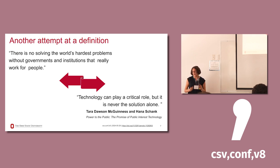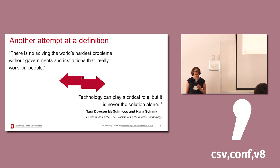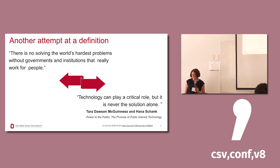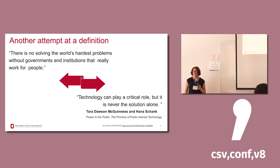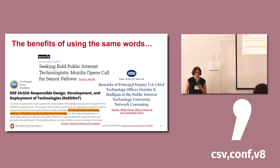There are many organizations and individuals already doing this work, but we do it under so many different names that if you say 'I want to be a public interest technologist,' there's not one clear pathway within our current university training systems or the way jobs and careers are currently advertised. To conclude this section, here's another attempt at a definition, taken from one of the first books on public interest technology — two quotes stitched together: 'There is no solving the world's hardest problems without governments and institutions that really work for people, and technology can play a critical role in that, but it is never the solution alone.'